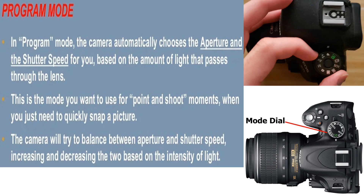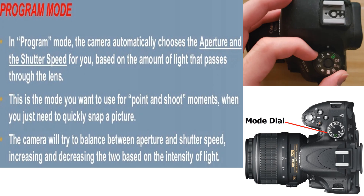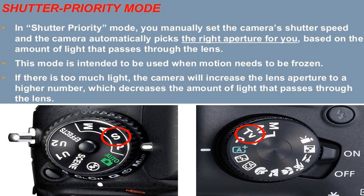In Program mode, the camera automatically chooses both the aperture and the shutter speed based on the amount of light passing through the lens. This is the mode to use for point-and-shoot moments when you just need to quickly snap a picture. The camera will try to balance between aperture and shutter speed, increasing and decreasing the two based on the intensity of light.